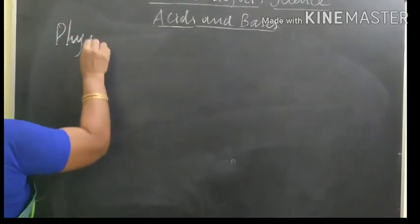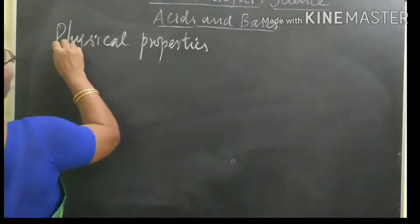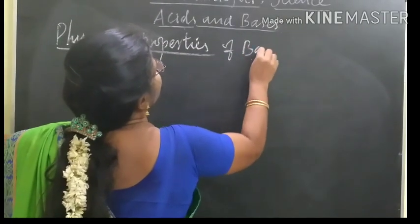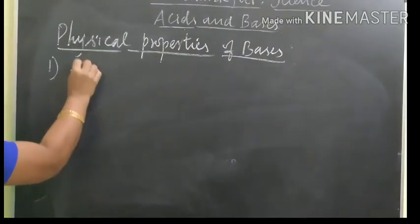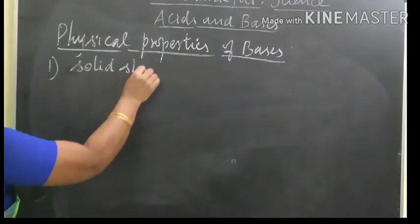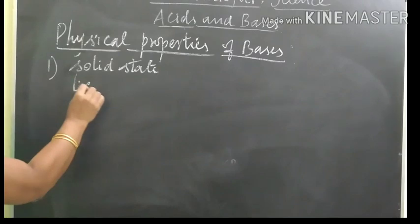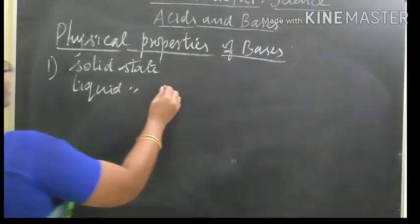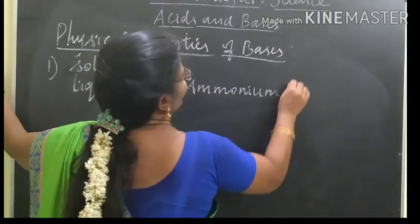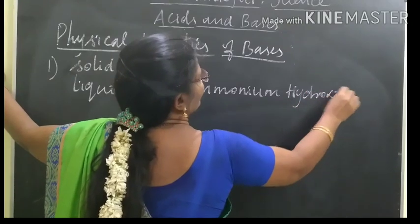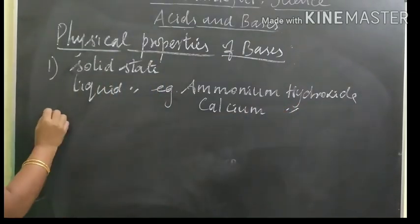We will see the physical properties of bases. Physical properties of bases. First point: bases exist in solid state. Some of the bases exist in liquid state. Example: ammonium hydroxide and calcium hydroxide. Second point: